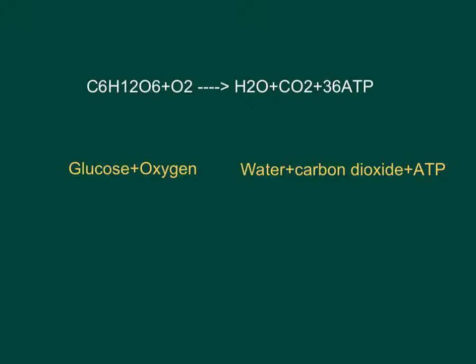Here we have the formula for the catabolic degradation of glucose by cellular respiration, which is glucose C6H12O6 plus oxygen O2 becomes H2O, which is water, plus carbon dioxide CO2, plus 36 ATP.